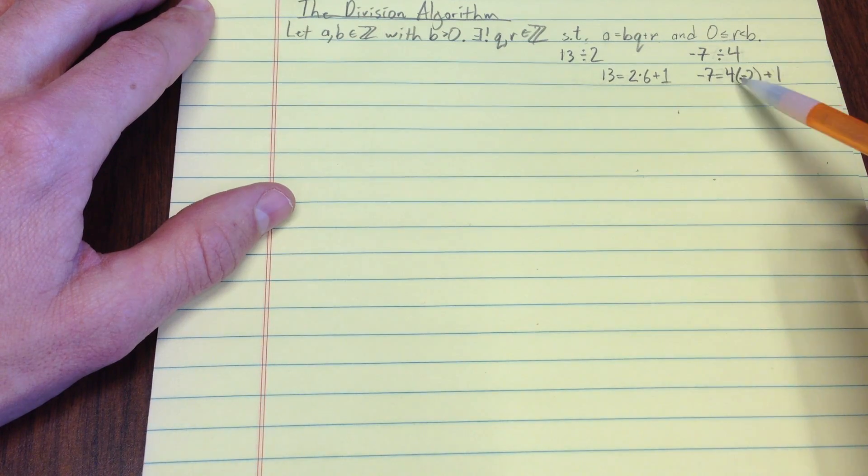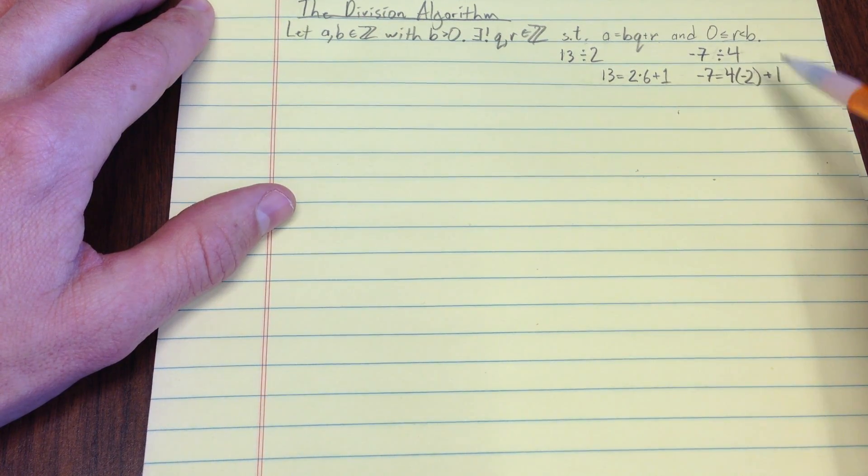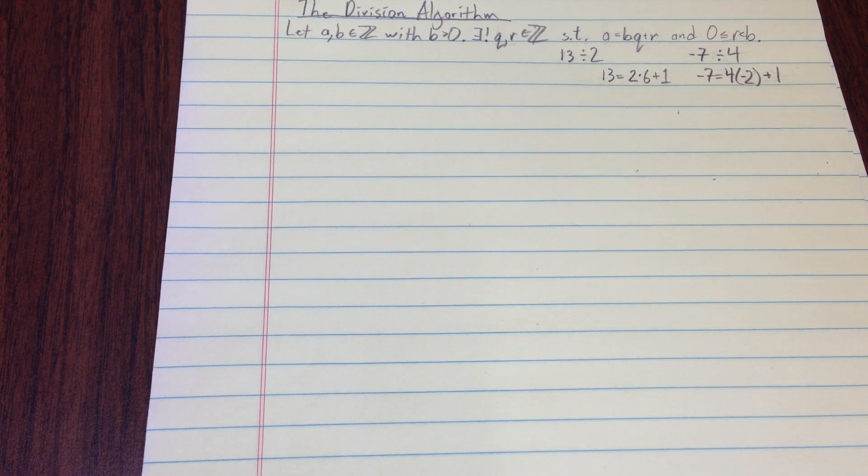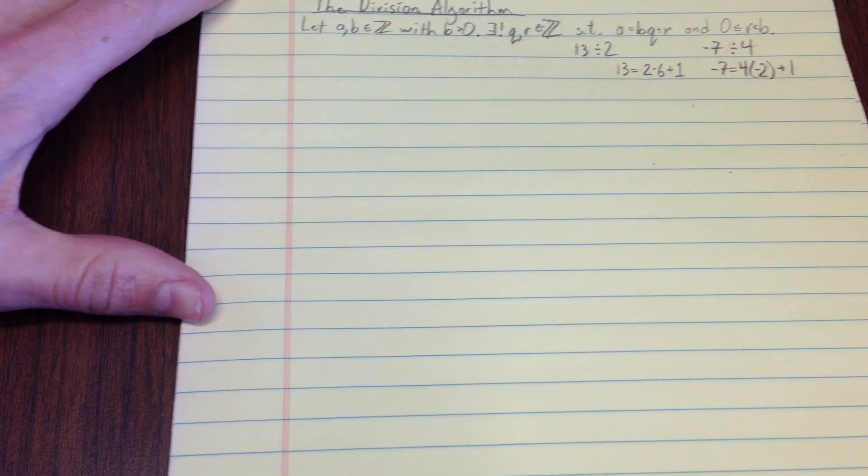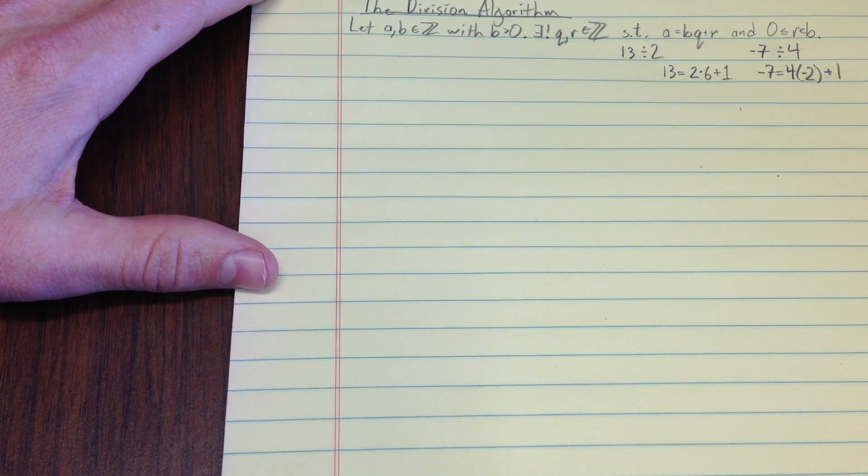Now, this theorem says a little more than I can just come up with negative 2 and 1. It says they're unique. So maybe you can convince yourself that in these two examples those are the only ones.